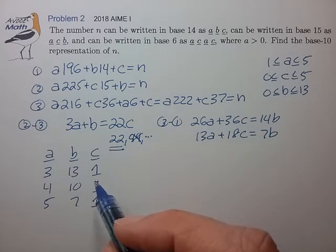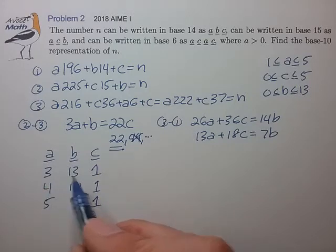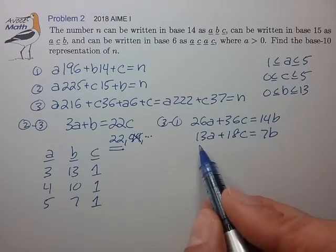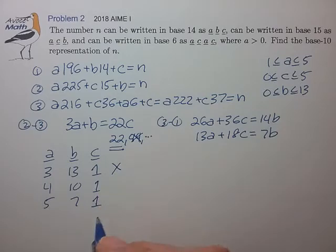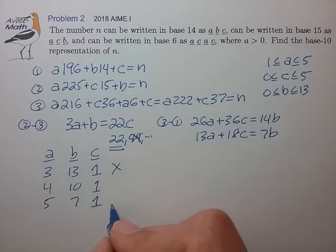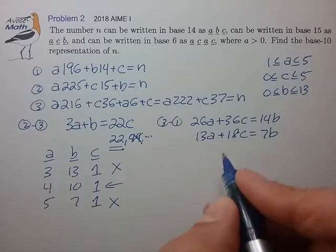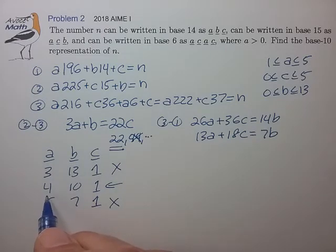We notice that for the first equation, the right side is too large to be satisfied by the left side. For the last equation, the left side is too large. So (4, 10, 1) is really the only one that has an opportunity to satisfy this equation.